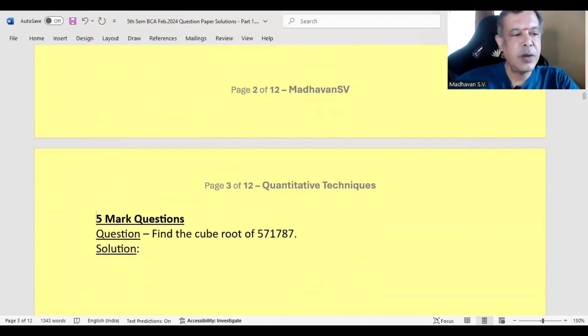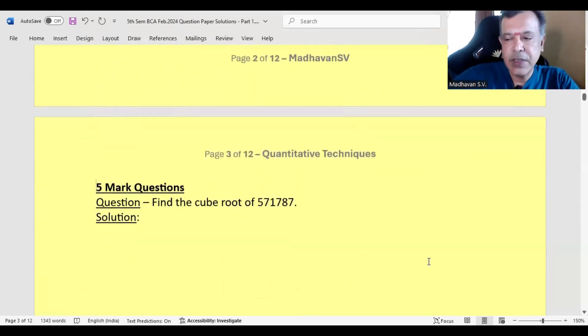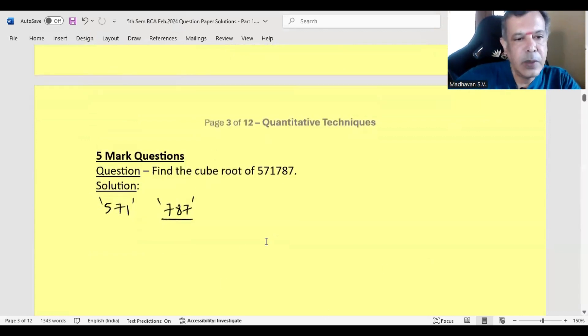We start with the five mark questions. First one: find the cube root of 571,787. First, what we will do is collect the triplets. The first triplet is 571 and the second triplet is 787. Now, consider the second triplet, which is 787.